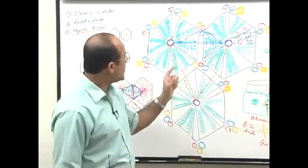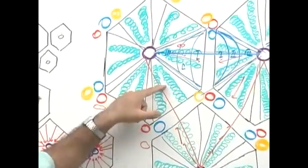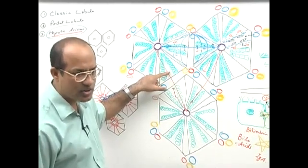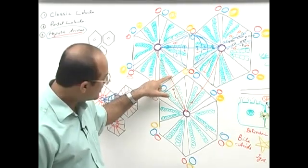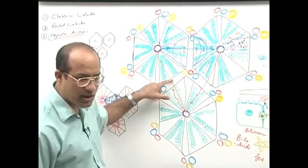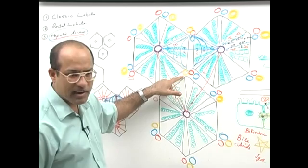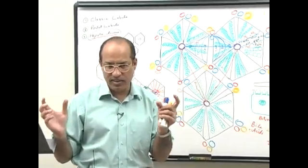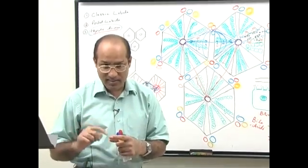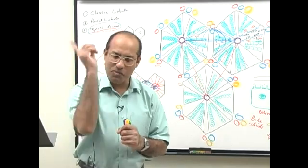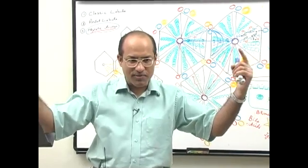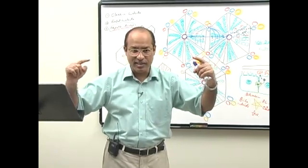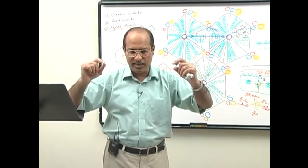To sum up the bile drainage system: bile drainage starts from the center where there are bile canaliculi. As they move to the periphery they become wider and are lined by special cells — these are called the canal of Herring (H-E-R-I-N-G). Bile canaliculi convert into canal of Herring, then they convert into cholangioles, and cholangioles come together to make bile ductules.